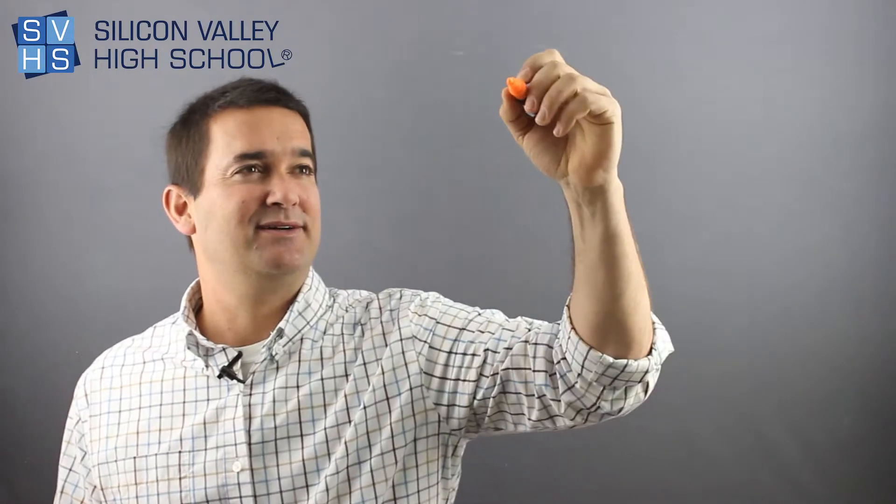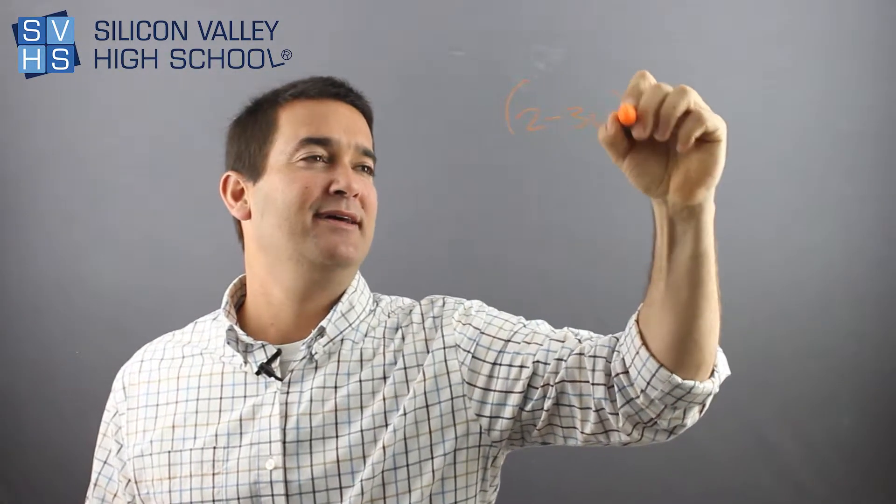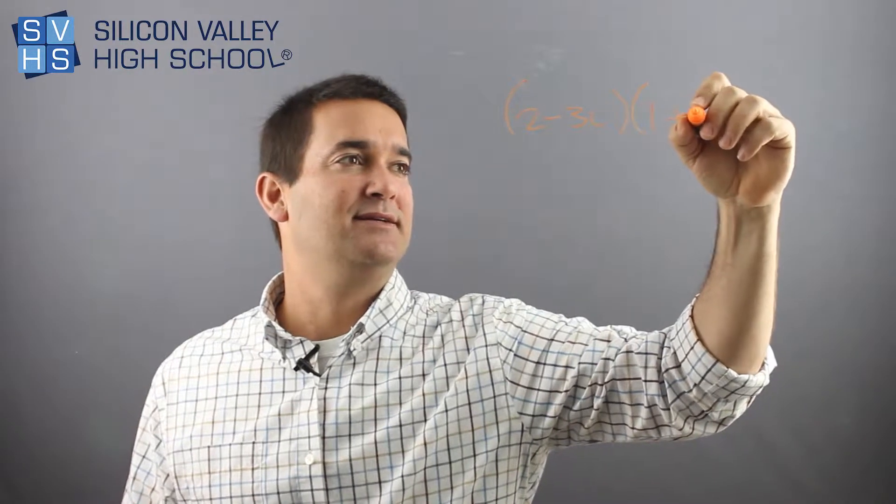As far as operations with imaginary numbers, a really typical one is like this. They'll give you two binomials like 2 minus 3i times 1 plus 2i.